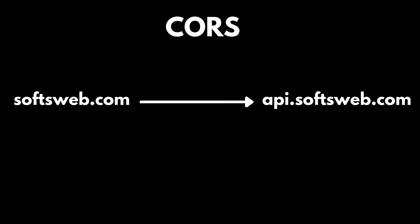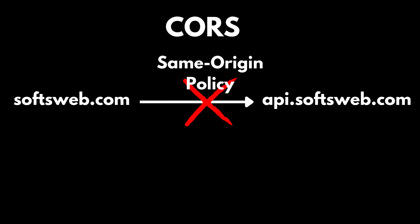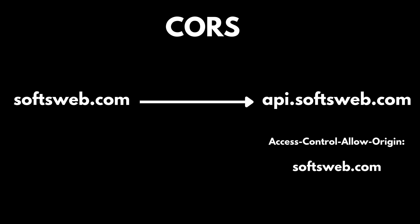Next, a common headache in web development: CORS, or cross-origin resource sharing. Browsers have a critical rule called the same-origin policy. A script from softswept.com can't normally make requests to api.softswept.com because they are technically different origins — this is a safety feature. CORS is a mechanism that safely relaxes this rule. It's like a diplomatic passport. Your frontend at softswept.com sends a request to your API at api.softswept.com, and the API responds with a header saying the API permits softswept.com to access its resources.